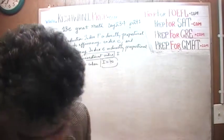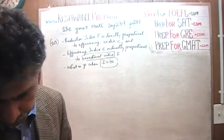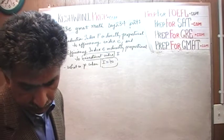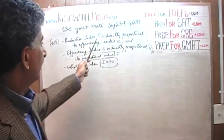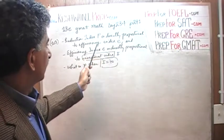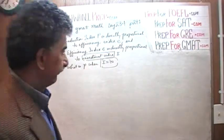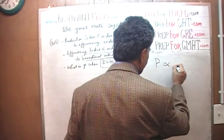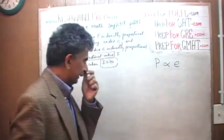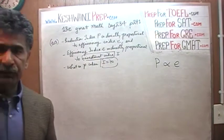It says, in a certain business, the production index P is directly proportional to the efficiency index E. Before we go any further, let's first understand what that means.